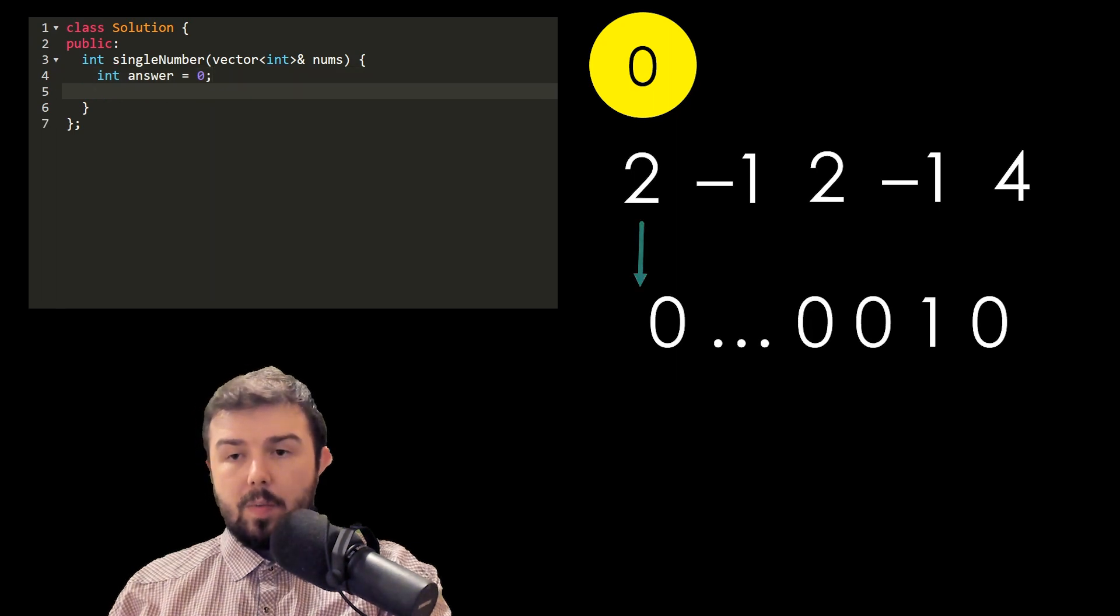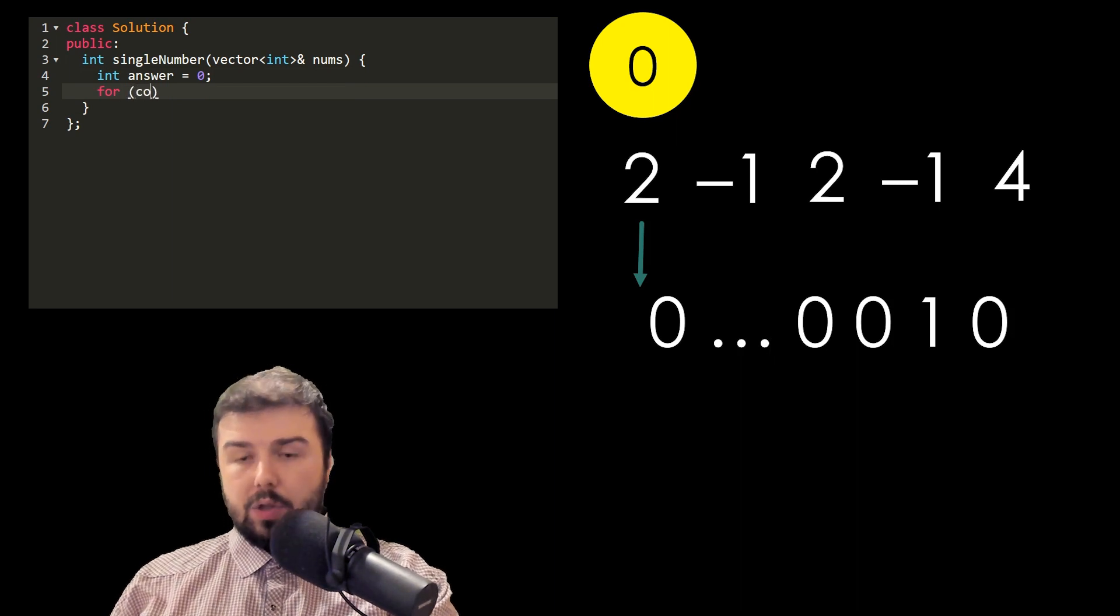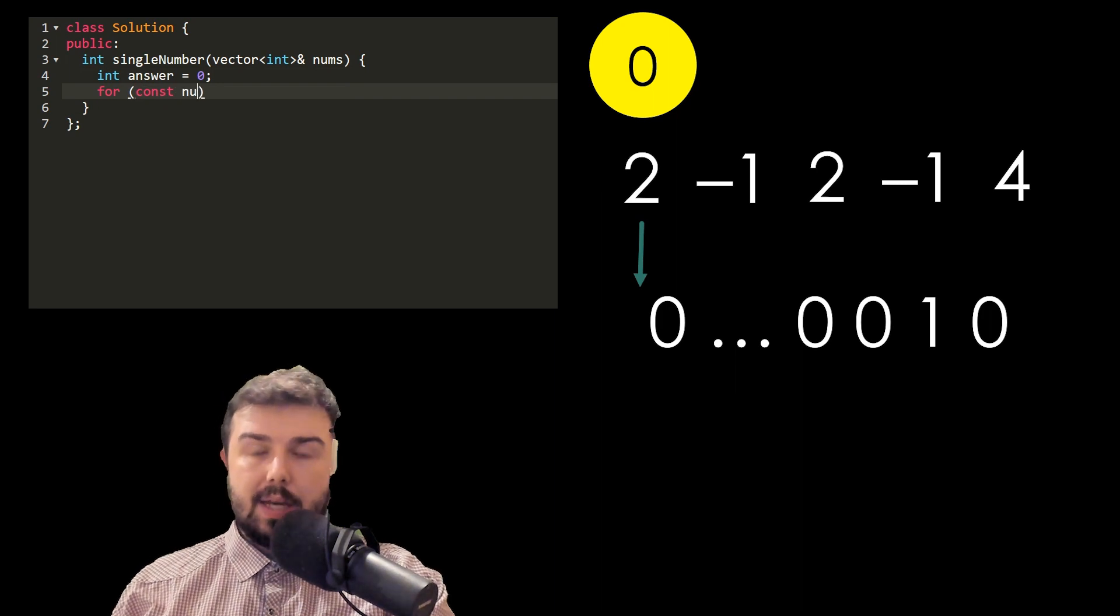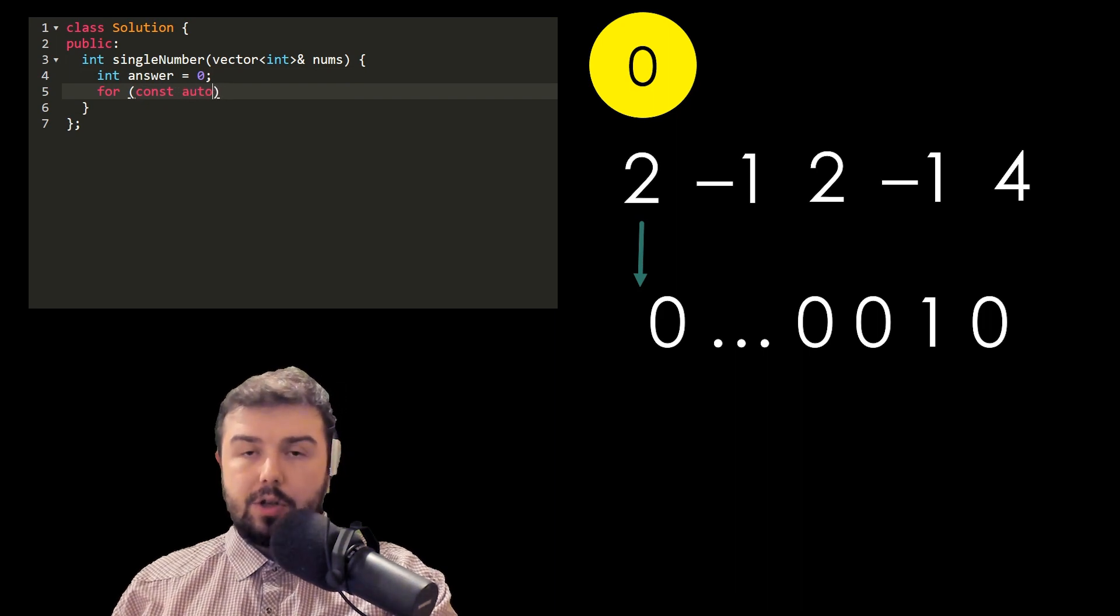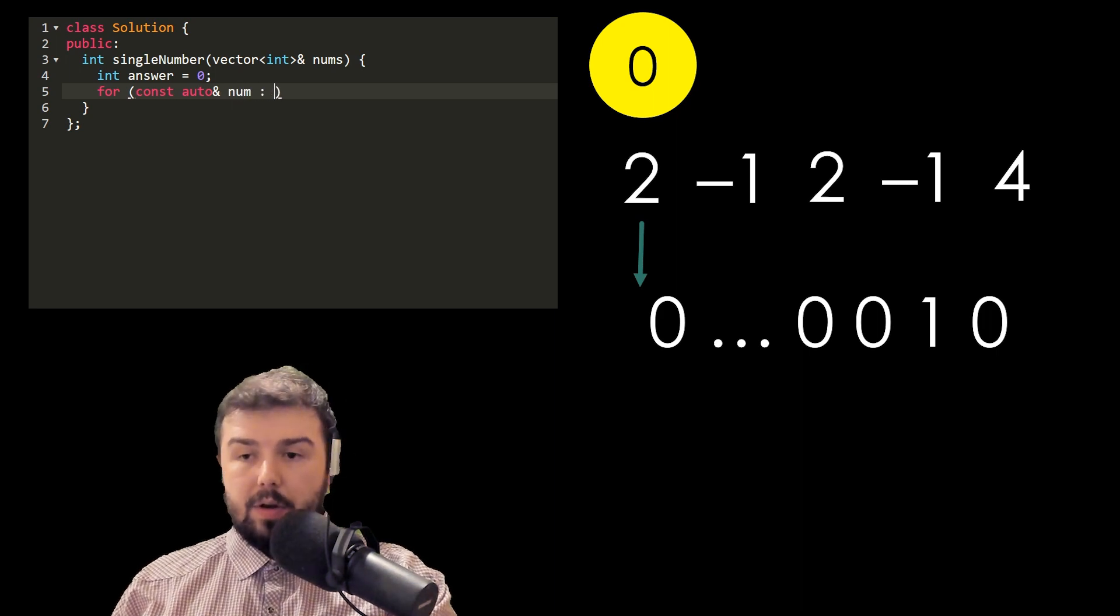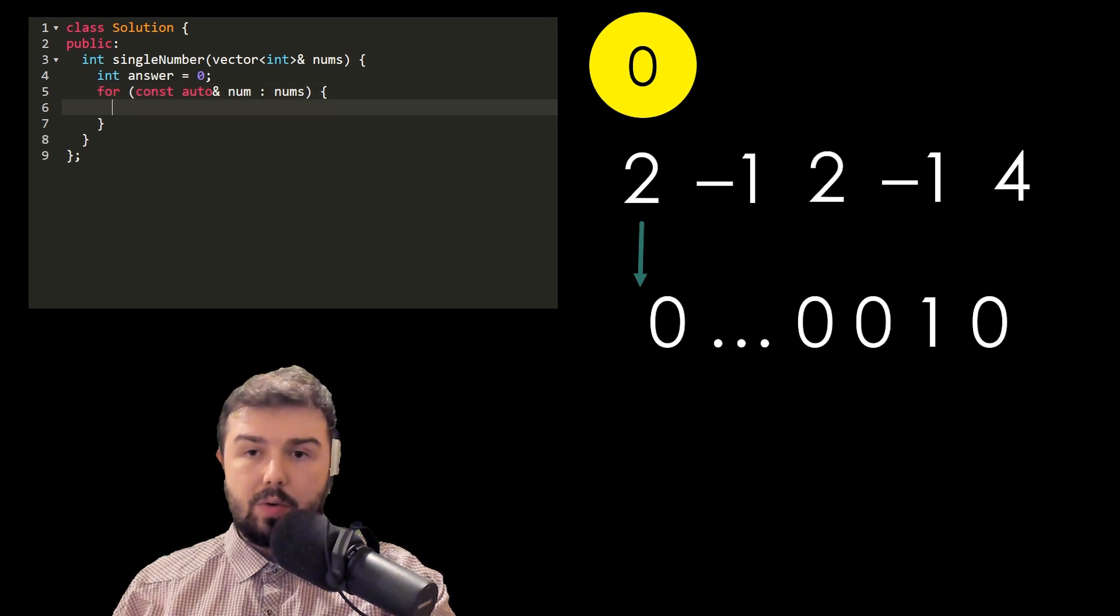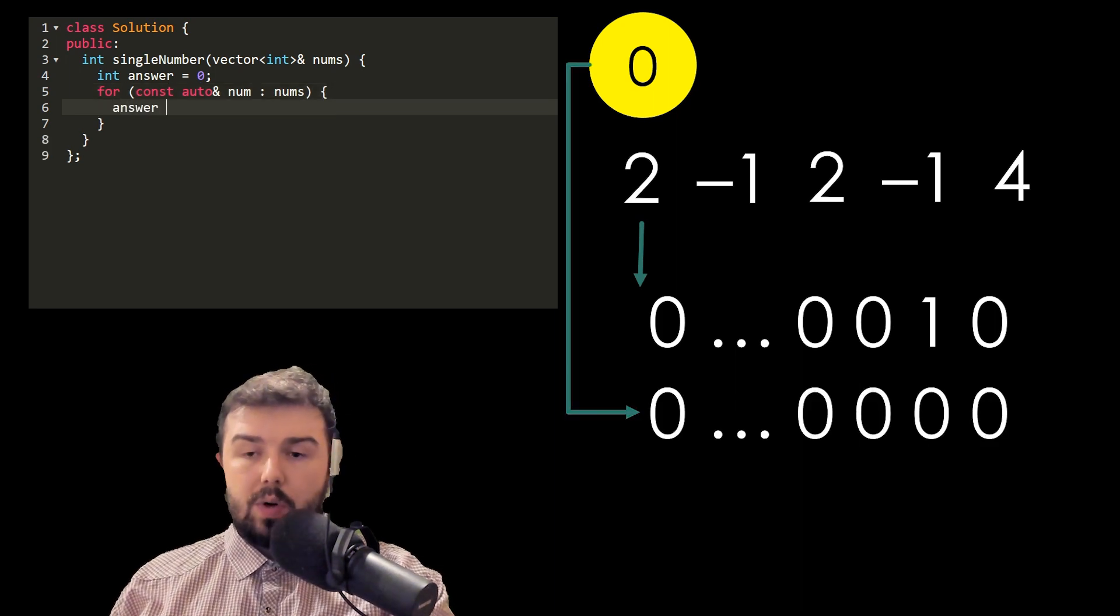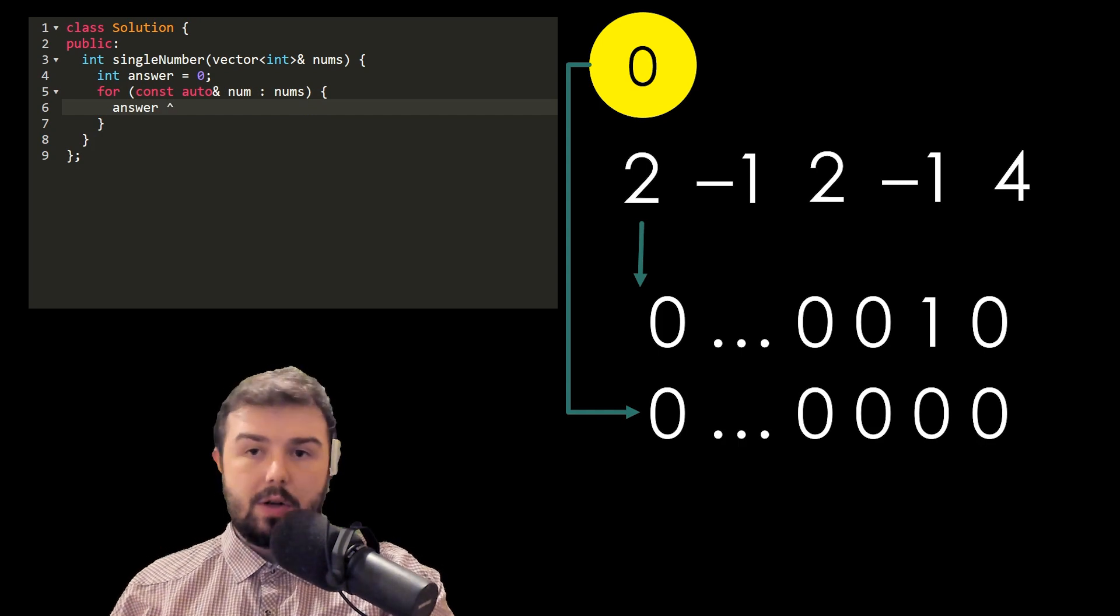We will use XOR operation. First we need to represent every number as a set of bits. For example, 2 will be represented like this: the first digit represents if it's negative or positive, and 1-0 represents 2.